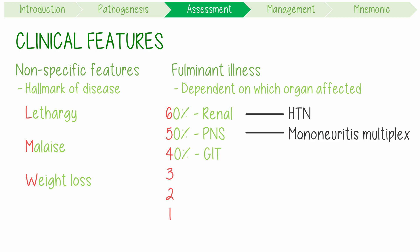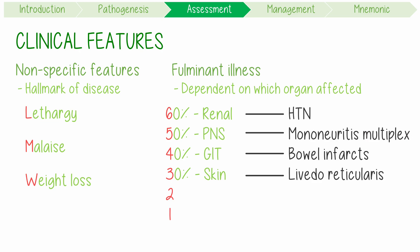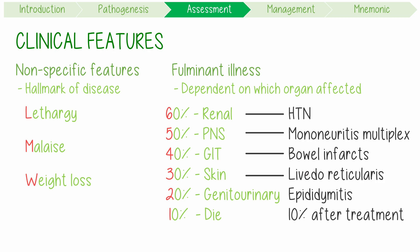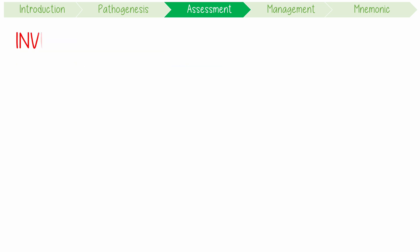40% get GIT disease in the form of bowel infarcts — this is the main cause of death in PAN. 30% have skin involvement in the form of palpable purpura or livedo reticularis, which is a mottled, purplish, lace-like skin pattern. 20% have genitourinary disease, including epididymitis. And 10% of people without treatment die, and 10% even after treatment end up relapsing.